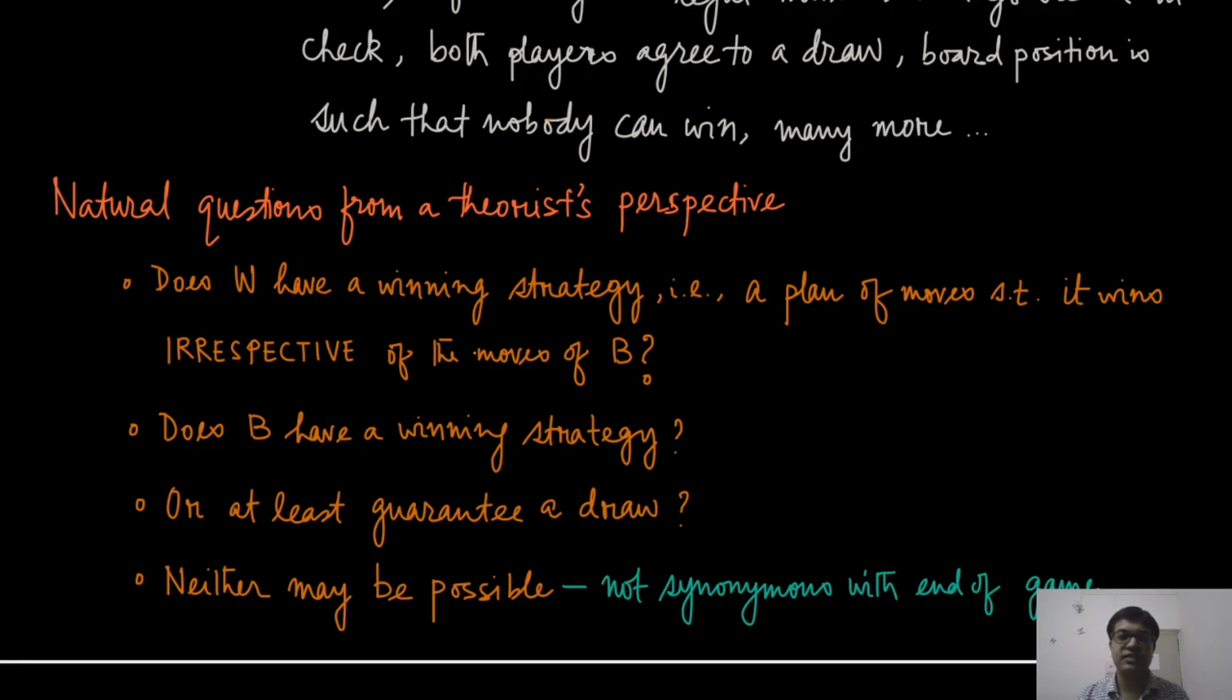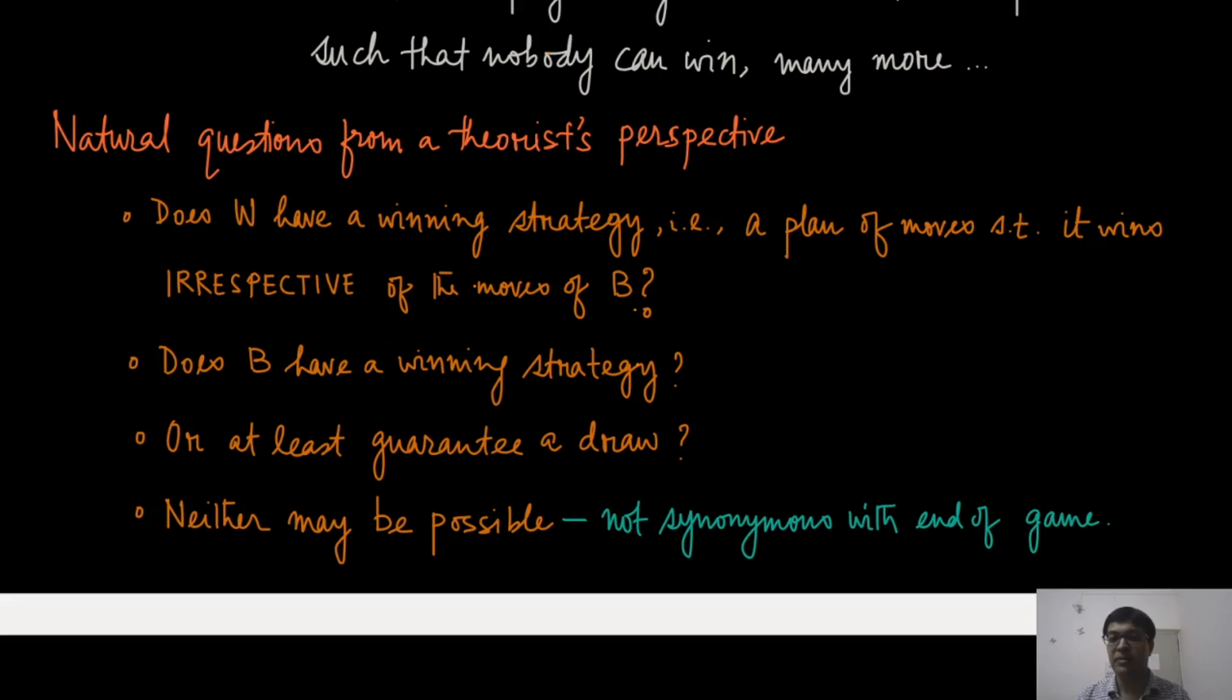Also note that the fact that nothing may be possible is not synonymous with the end of the game. We know that the end of the game will happen in only three outcomes, white wins, black wins, or it's a draw. But whether for every possible action of the other player, you are still going to win or manage a draw, that's a much difficult question and also a much interesting question to ask.